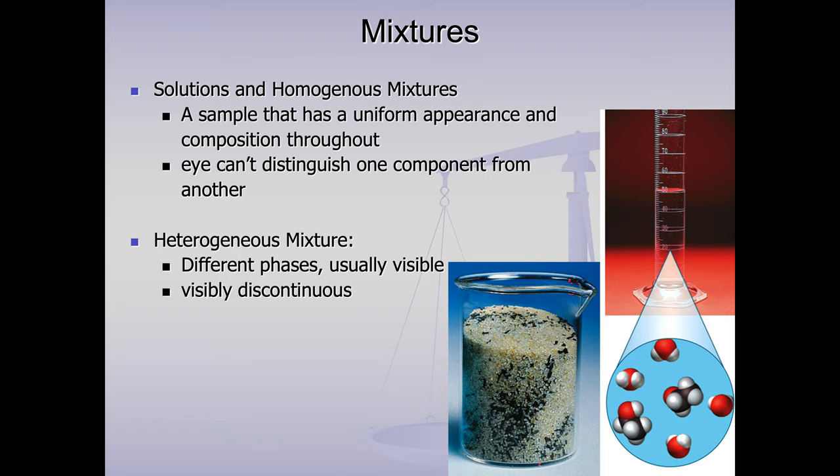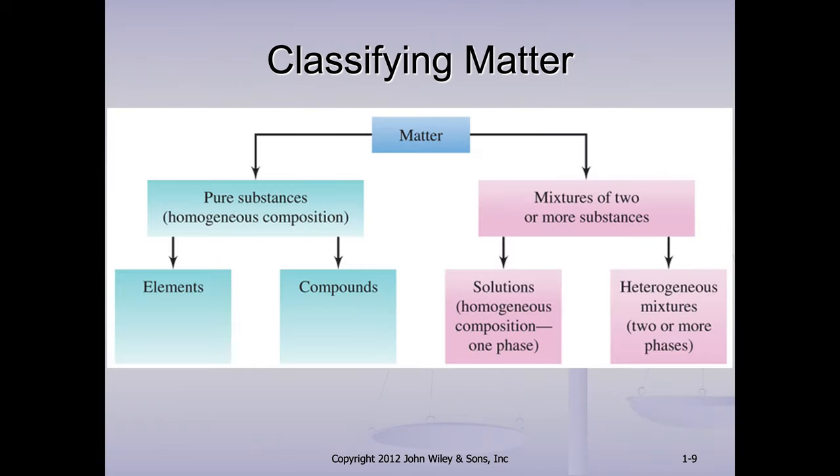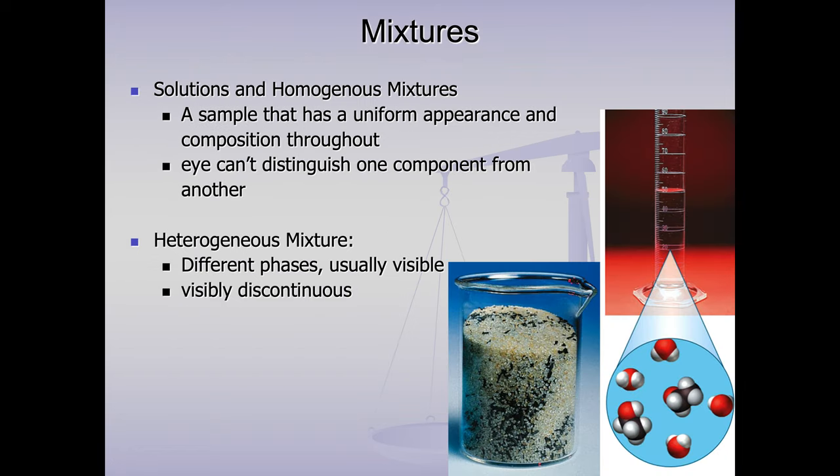So mixtures are traditionally broken up into homogeneous and heterogeneous. So one thing that's very helpful in the sciences is learning prefixes and words. Hetero is a prefix that means different, heterogeneous. Homo is a prefix that means same. So a heterogeneous mixture just means it's not evenly mixed. So this would be a heterogeneous mixture. The mixture of water and sand that I was talking about would be a heterogeneous mixture. Noodles and water.